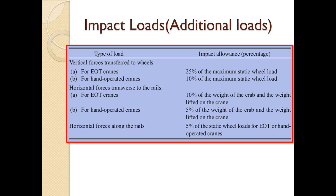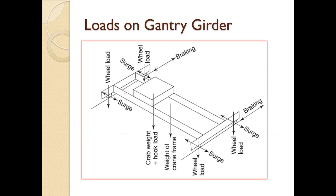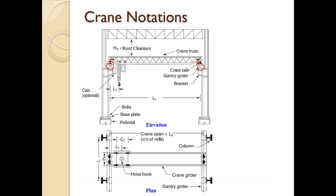The vertical loads acting on the gantry girder are the reaction from the crane girder, consisting of the self weight of the crane, self weight of the crab, and crane capacity — the maximum load that can be hoisted. The maximum wheel load is computed when the crab is nearest to the gantry girder. In addition to the reaction from the crane girder, the self weight of the rail should also be considered.